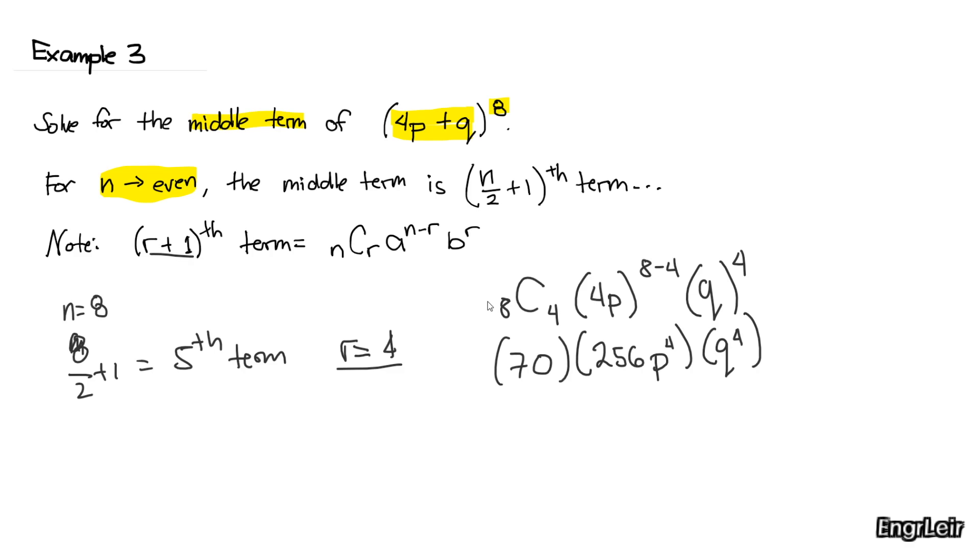Finally, multiplying everything, we have 17,920 P raised to 4 Q raised to 4. So one clue that we know we're correct, this is our answer.